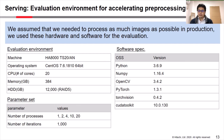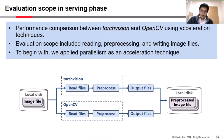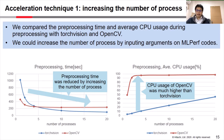This figure indicates the overall processes we evaluated. We compared the performance between TorchVision and OpenCV using acceleration techniques. Our evaluation scope included reading files, preprocessing files, and writing image files. To begin with, we applied parallelism as an acceleration technique. We compared the preprocessing time and average CPU usage with TorchVision and OpenCV, and we could increase the number of processes by inputting arguments in the MLPerf code.